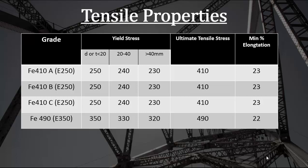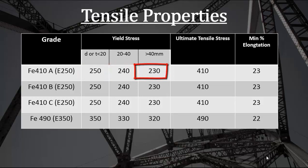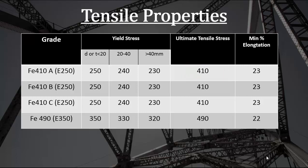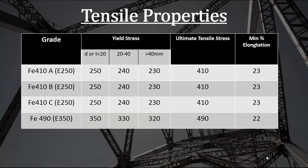For Fe 410 A or E 250 grade: the yield stress for members up to 20 mm thickness is 250 N/mm², for 20 to 40 mm it is 240 N/mm², and for more than 40 mm it is 230 N/mm². The ultimate tensile stress is 410 N/mm². For E 350 grade, that is Fe 490, the yield stress decreases from 350 to 330 to 320 with increasing thickness, but the ultimate tensile stress remains constant at 490 N/mm².